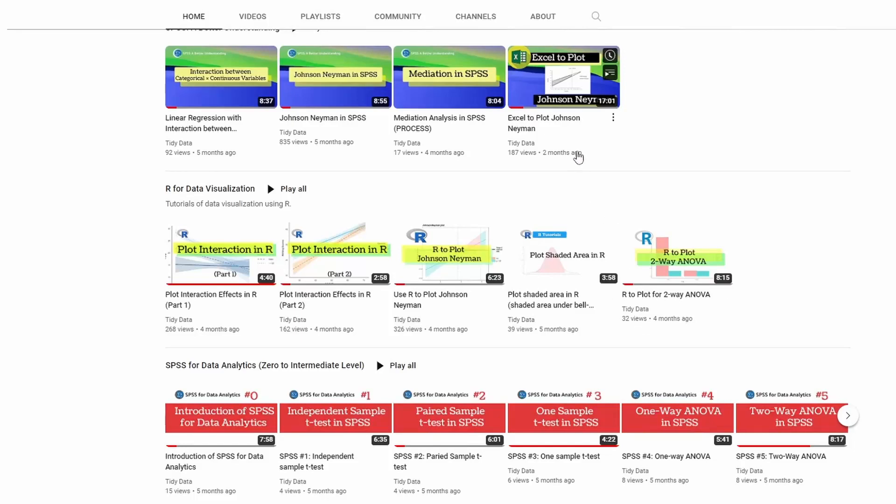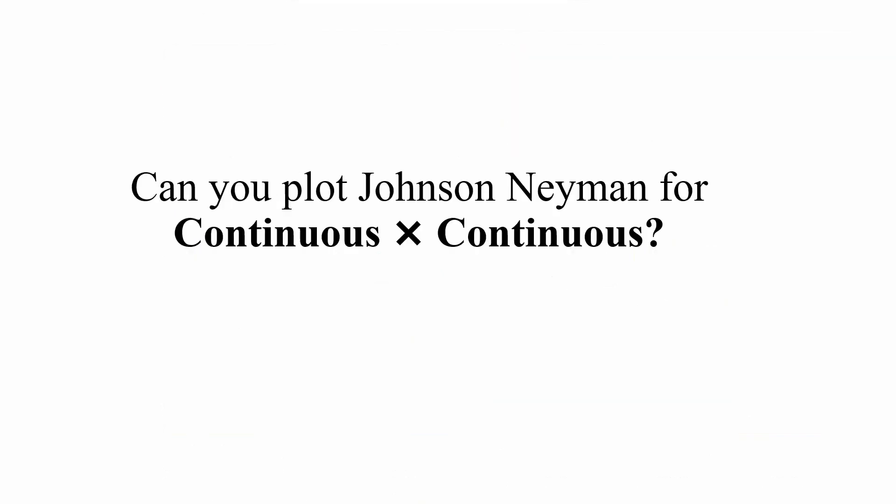I made a video two months ago about how you can plot the Johnson-Neyman region for the situation that is a categorical variable times a continuous variable. Some of you ask the question whether we can plot a Johnson-Neyman for continuous times continuous. The short answer is yes.